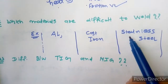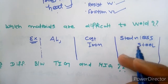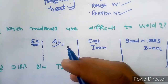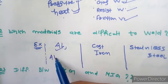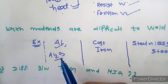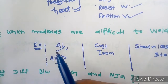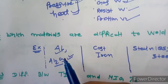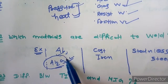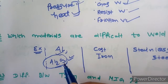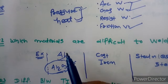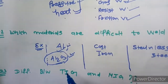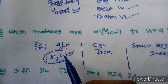The second question is: which materials are difficult to weld? There are three materials that are difficult to weld in a normal welding process: aluminium, cast iron, and stainless steel. Aluminium is difficult to weld because its oxide Al2O3 has a melting point of 9000 degrees centigrade, so you cannot break this oxide layer with arc welding or gas welding. For welding aluminium, we use tungsten inert gas welding.